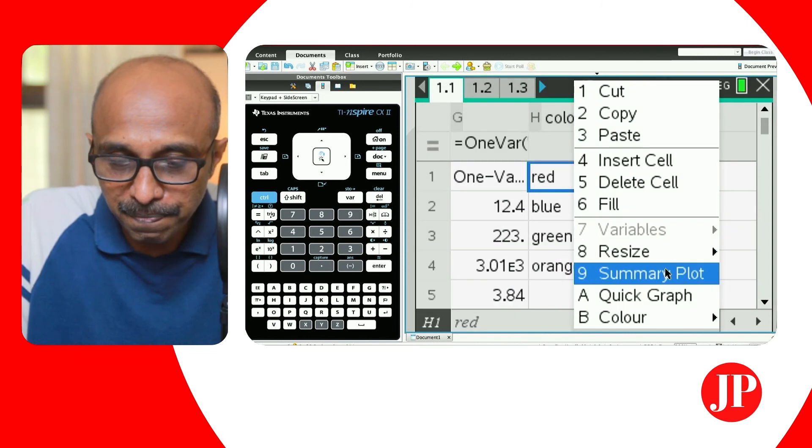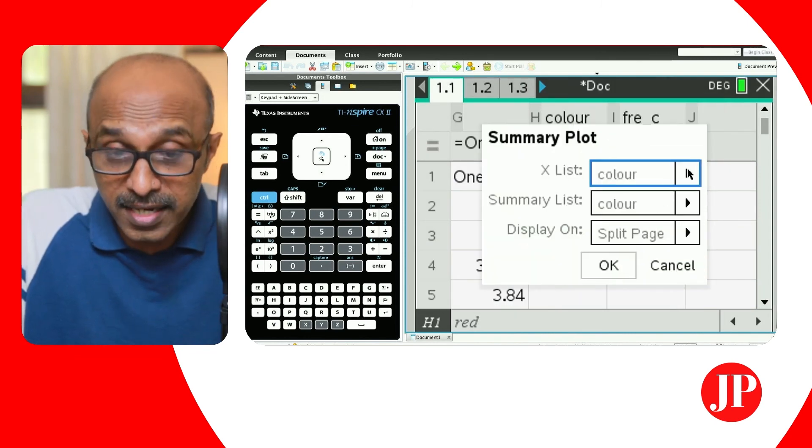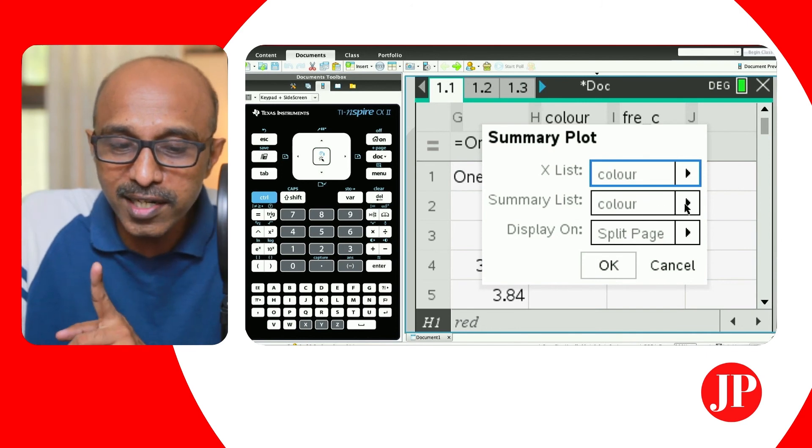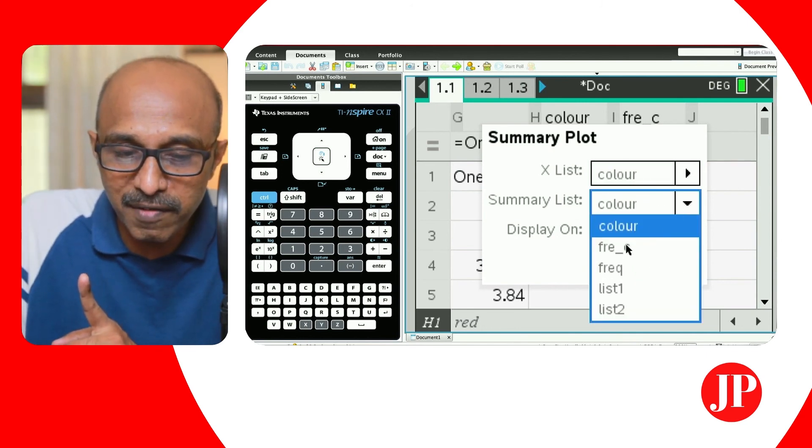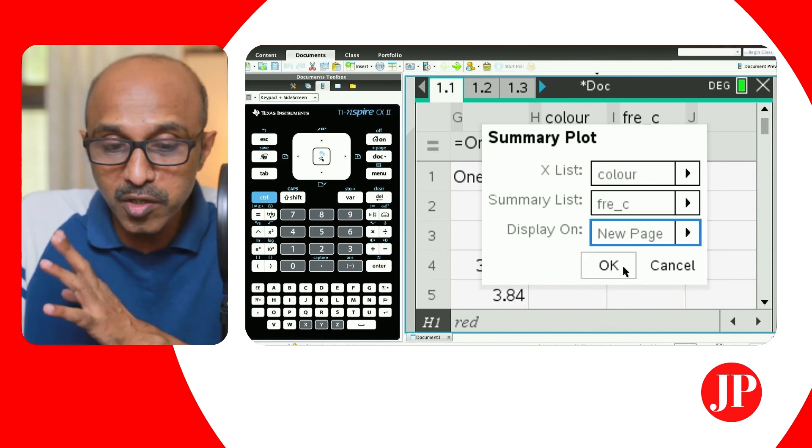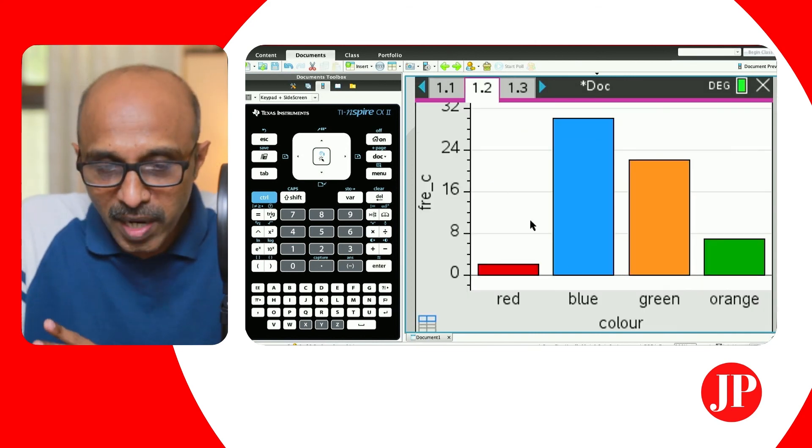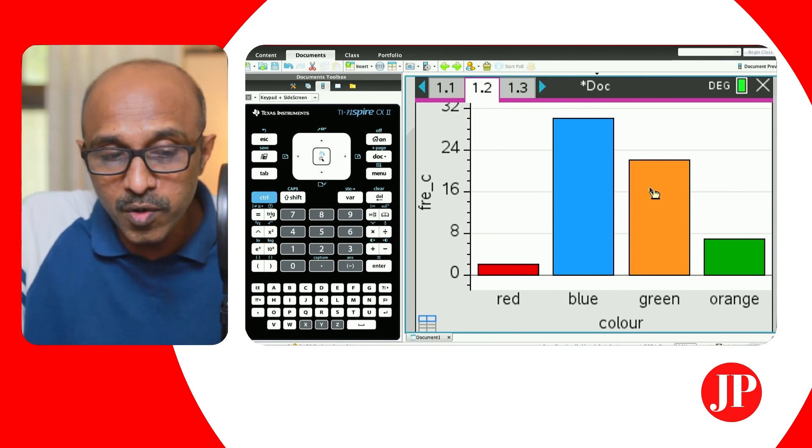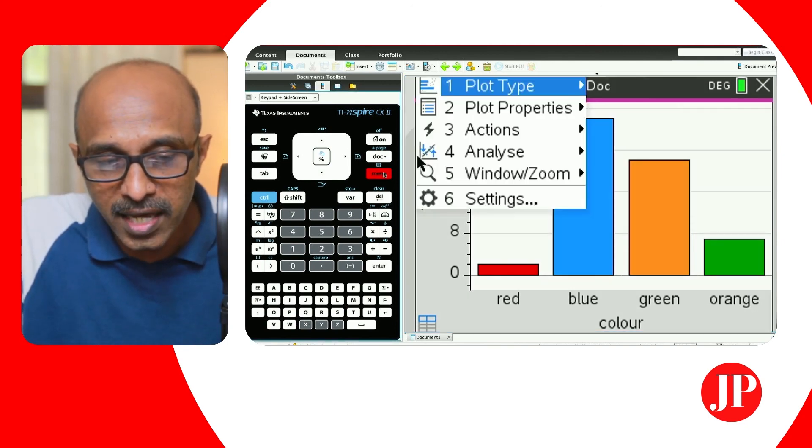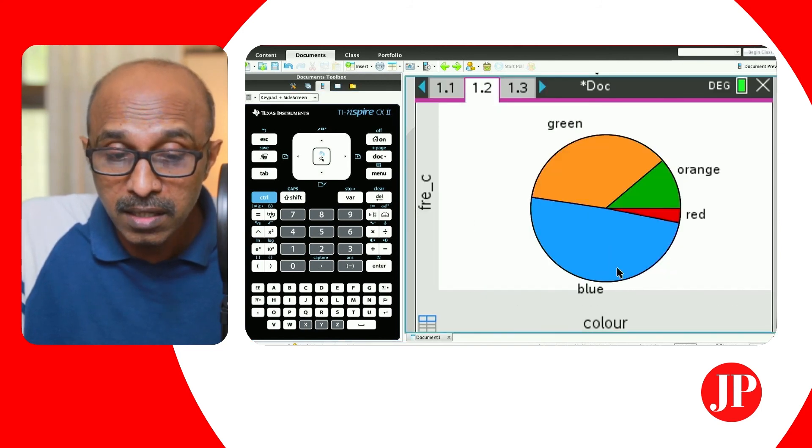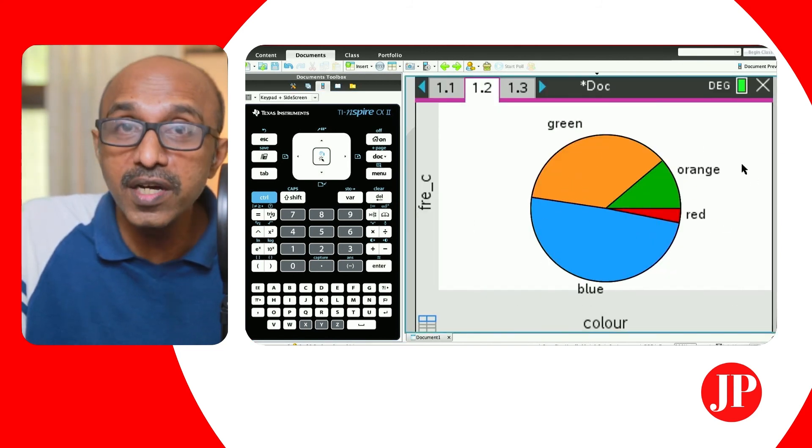If I go to summary plot and I say the X list, this X list is color. It's recognizing, but the summary is not color. The summary should be coming from the frequency. We want it on a new page, altogether new page. I say, okay, and automatically it's creating this bar chart. And if you're happy with the bar chart, good for you. But we can go ahead and even change that plot type to say, I want a pie chart. And then automatically a pie chart is created for me.